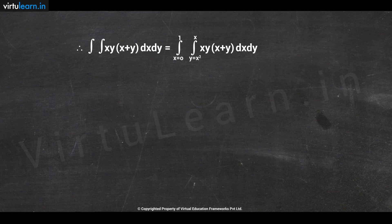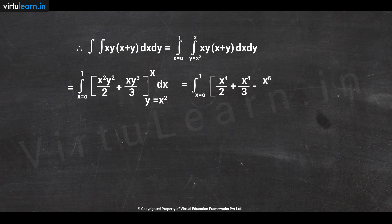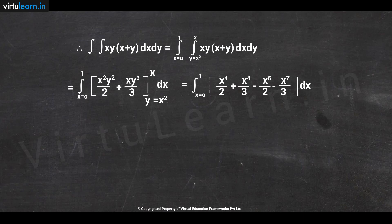We perform integration with respect to y first, treating x as a constant. We get ∫₀¹ [x²y²/2 + xy³/3] evaluated at y = x² and y = x, then dx. Substituting the limits we get ∫₀¹ (x⁴/2 + x⁴/3 − x⁶/2 − x⁷/3) dx. Let us simplify a little more.